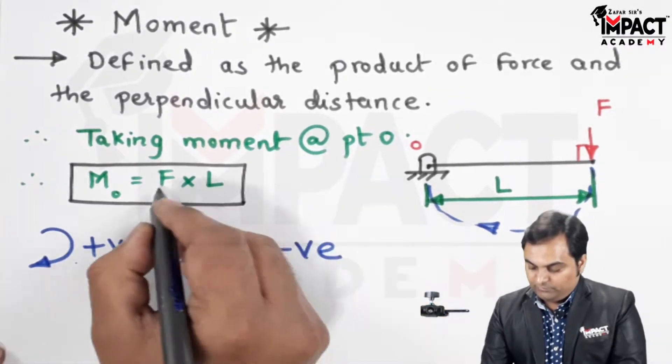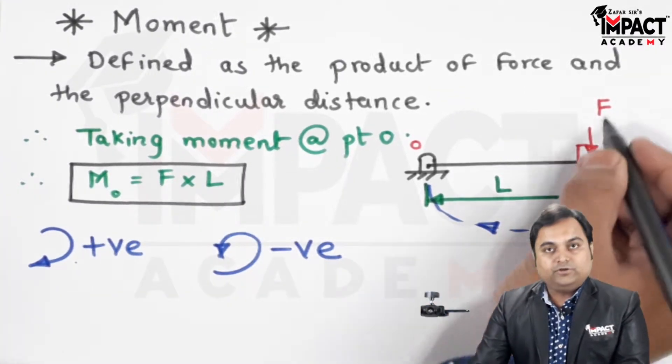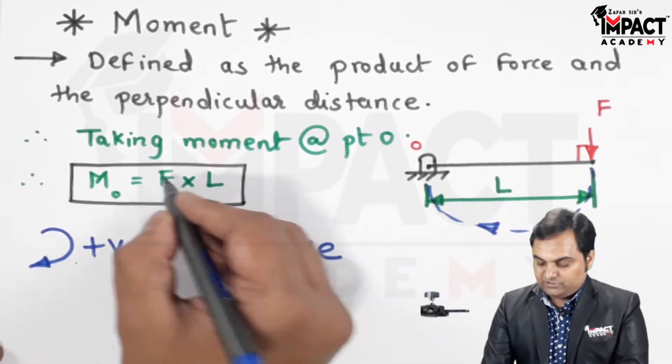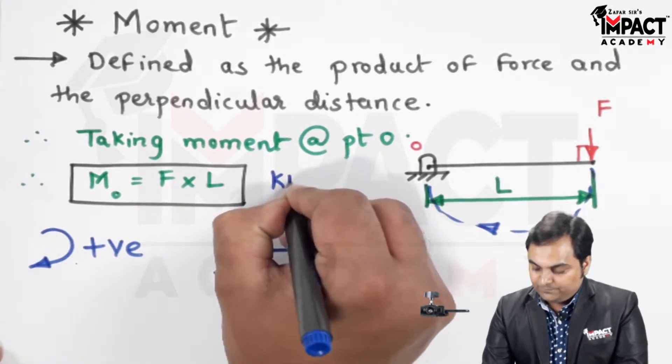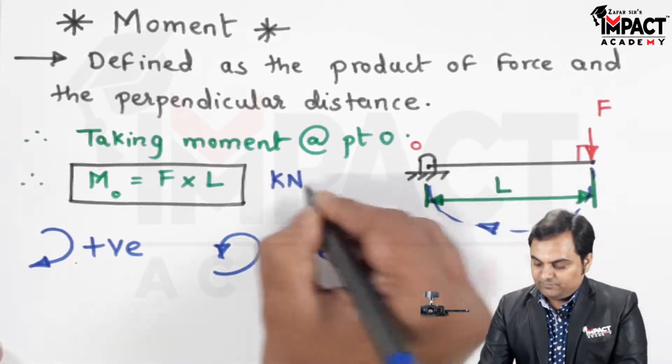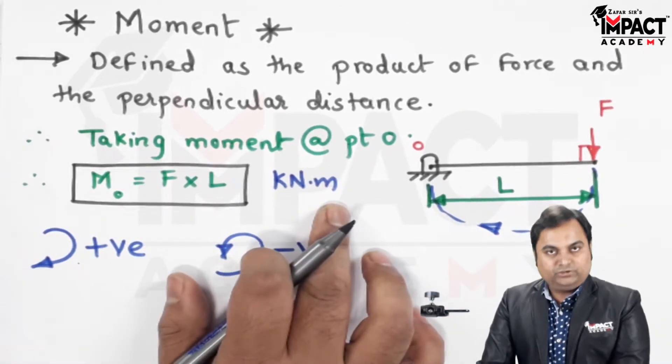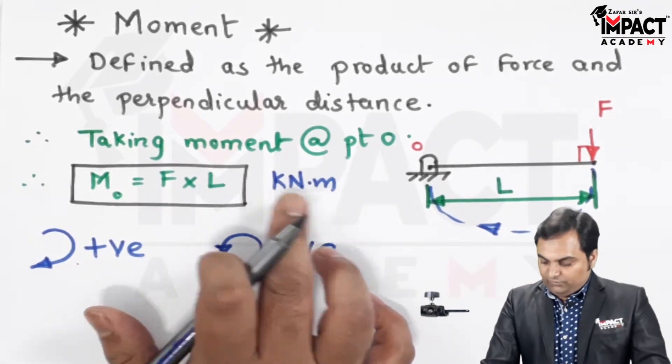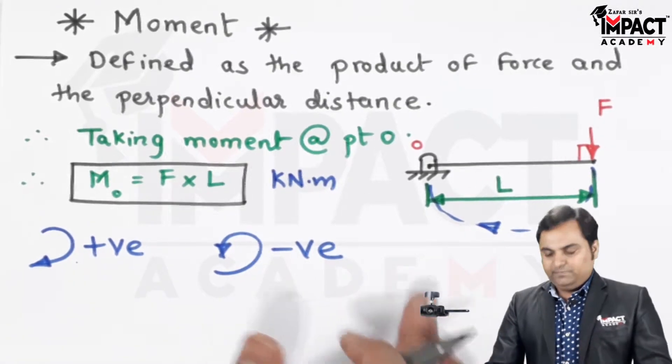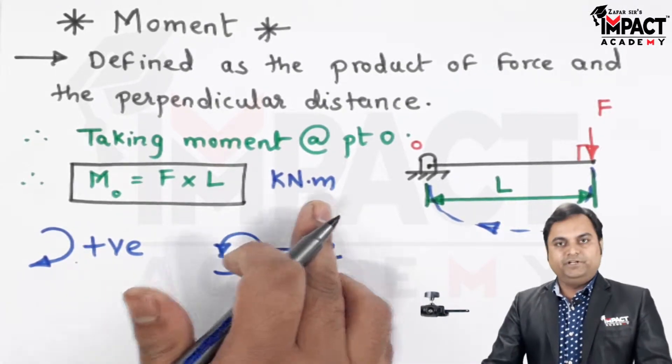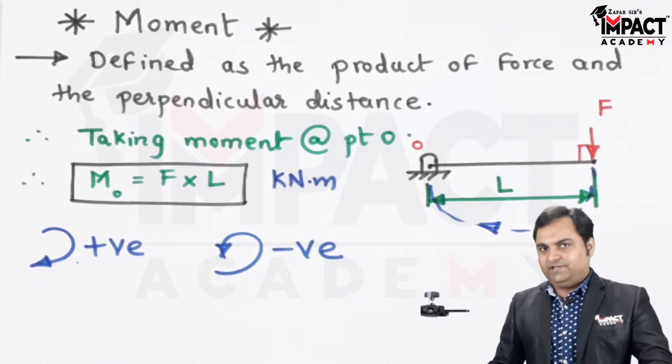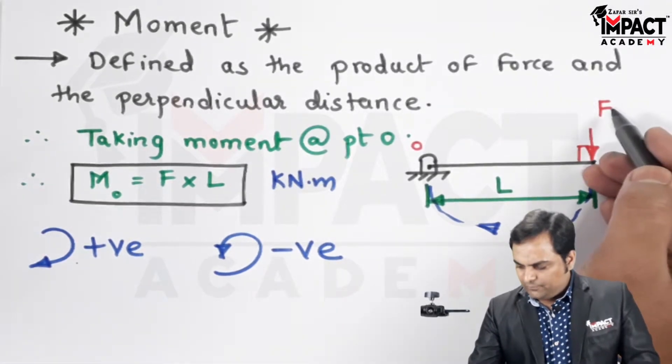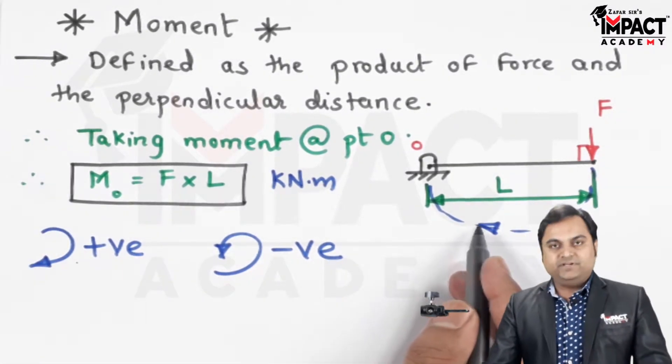The unit of moment, since it is the product of force and perpendicular distance—suppose the force is in terms of kilonewton and distance in terms of meter—it is kilonewton times meter. It can even be Newton meter or Newton centimeter, depending upon the unit of force and distance.